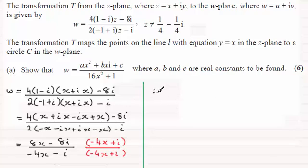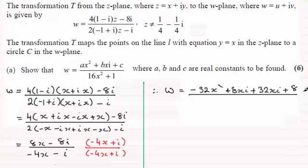So we therefore have got w equals. So expanding the top here I can see we're going to get minus 32x squared. And then we've got plus 8xi. And then plus 32xi. And then we've got plus 8 there. And all of this is divided by and we get our 16x squared plus 1.